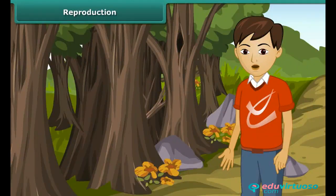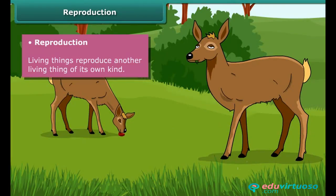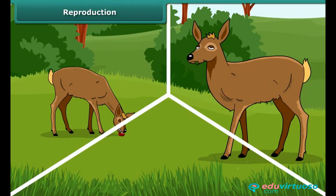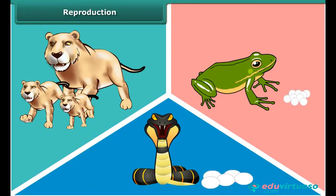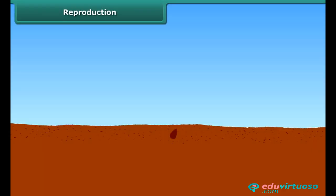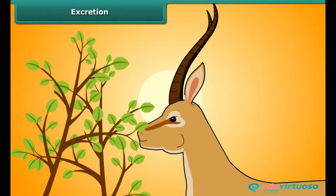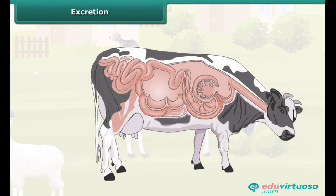A very important characteristic of living things is reproduction. All living things have the ability to reproduce another living thing of their own kind. Animals like pigeons, snakes, and frogs lay eggs, while some animals like lions, dogs, and humans give birth to young ones of their own kind. Plants reproduce through seeds or other parts of the plant. Animals require food for growth and development; however, during the process of digestion, many waste materials are produced in the body which do not provide any nourishment.